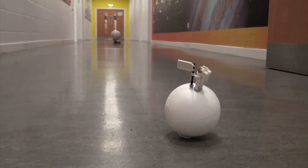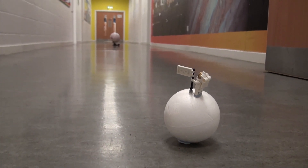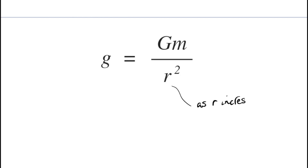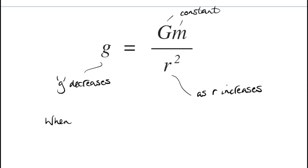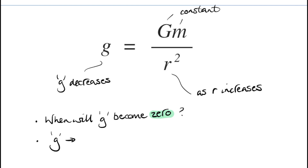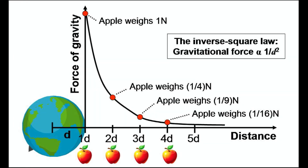So where would you have to go for the gravitational field strength to fall to zero? Let's look at this relationship. As R increases, then g will decrease. So if G and M are constant, then when will the gravitational field strength become zero? Mathematically, g will only approach zero as R approaches infinity. This is another example of the inverse square law at work, where the gravitational force decreases with the square of the distance.